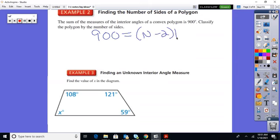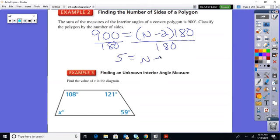We're working it backwards to find how many sides we have. So, easiest way is to not distribute, but instead just divide your 180 right off the bat. So 900 divided by 180 is 5. So 5 equals N minus 2.